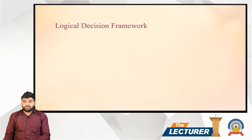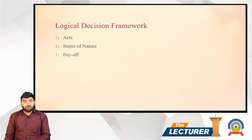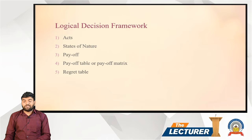There are five elements in the logical decision framework. First is Act. Second is State of Nature. Third is Pay Off. Fourth is Pay Off Table or Pay Off Matrix. Fifth is Regret Table. Let's understand each one.